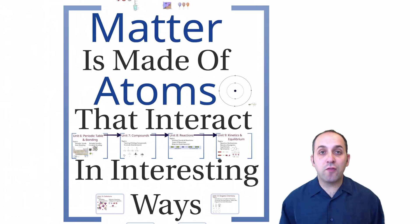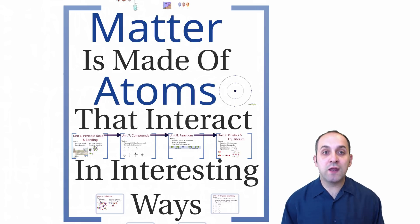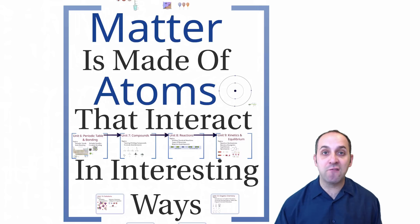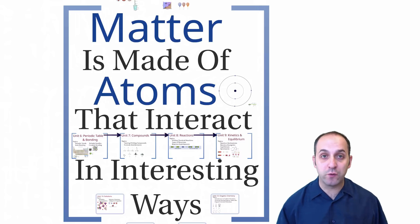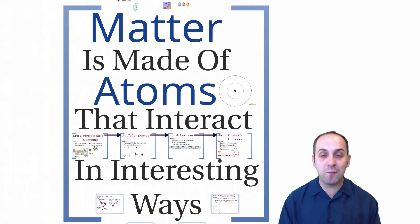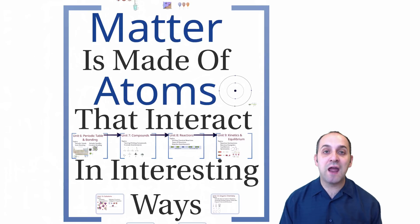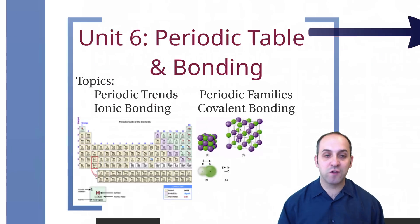Our overall theme for the year is that matter is made of atoms and that atoms interact in interesting ways. Up to now, we've been looking at groups of atoms doing things in mass in our physical behavior of matter units. Then we looked at the actual atomic structure. Now let's look at how the elements are arranged and some of the themes that we see in elements and how they bond with each other.